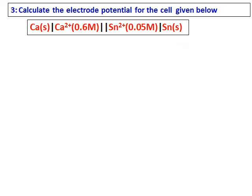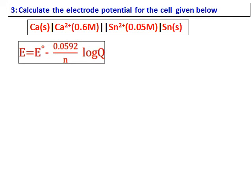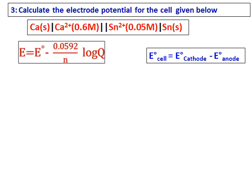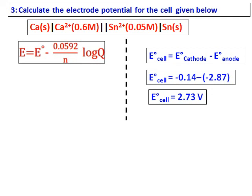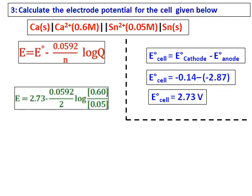Calculate the electric potential for the cell: calcium | calcium ions || tin ions | tin. Calcium is the anode and tin is the cathode. Use the equation E equals E0 minus 0.0592 over N times log Q. First, calculate E0 from standard reduction potentials from the literature. Then substitute all values — remember that for log Q, the anode concentration comes first (numerator) and the cathode concentration is in the denominator — and calculate E.